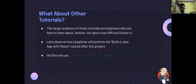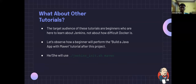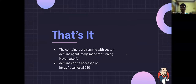What about the other tutorials? We are using the same Docker commands in tutorials aimed at beginners learning about Jenkins, not about how difficult Docker is. After this project, for example the 'Build a Java App with Maven' tutorial, the user will only need to clone the repo and use the init script with a 'maven' argument. That's it — their whole setup is running with containers using a custom Jenkins agent image made for running the Maven tutorial, and Jenkins can be accessed on localhost 8080. Everything works with Gitpod with just a click.